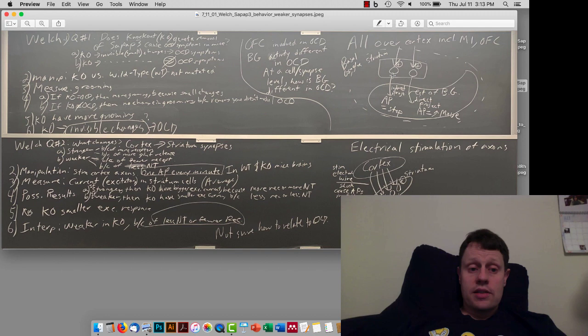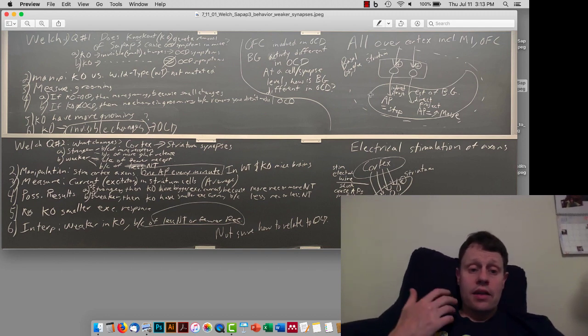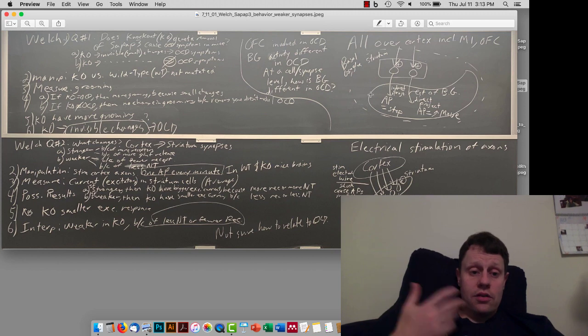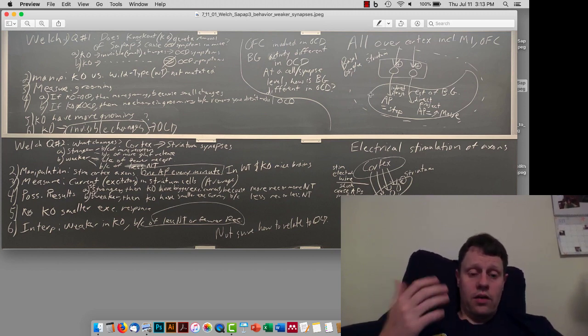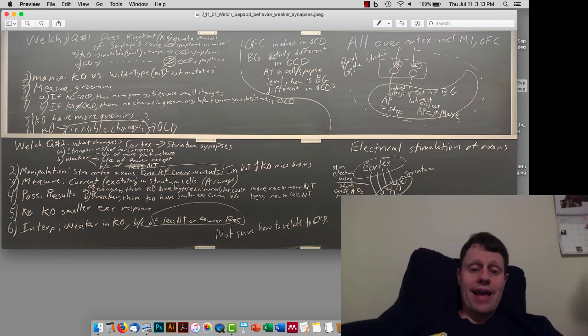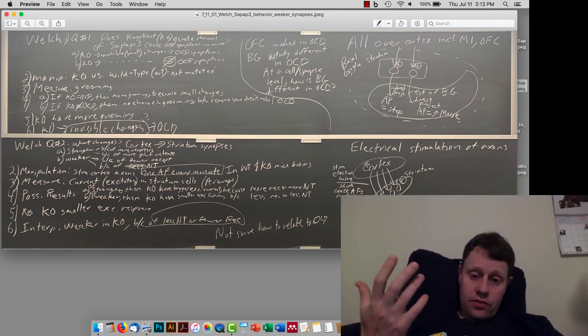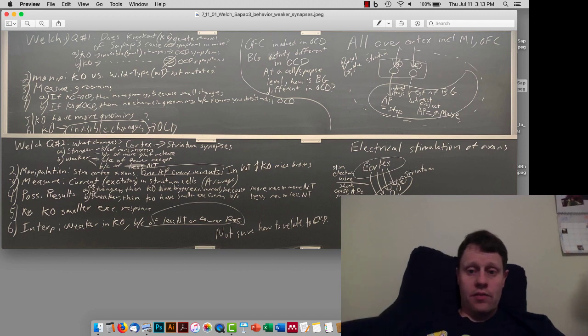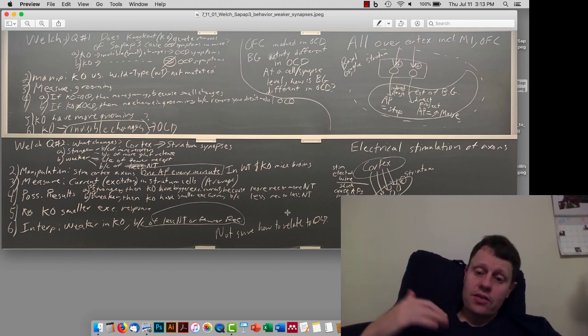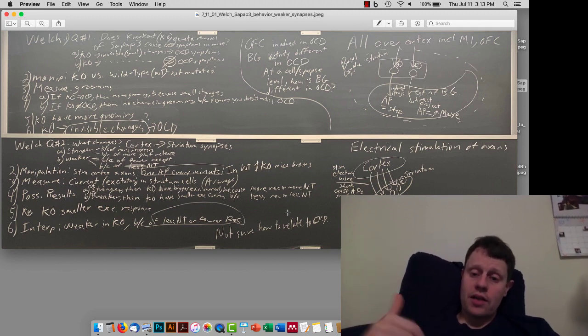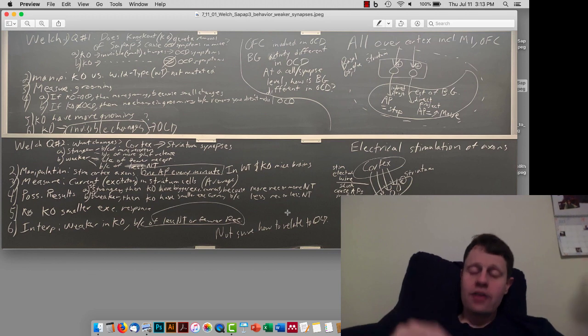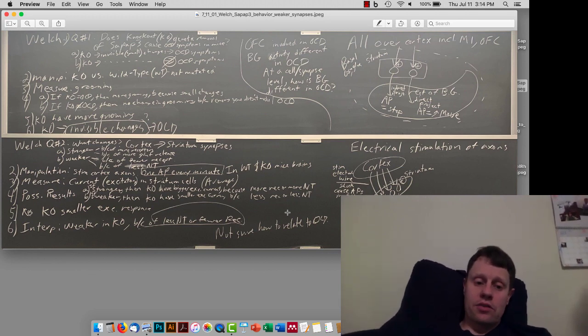The first thing is just to see, are these responses stronger or weaker? What they find is that the excitation, the excitatory response in the striatal cells, is weaker. And so, what they infer is that either there are fewer receptors, or there's less neurotransmitter being released from these presynaptic axons. There are either fewer receptors on the postsynaptic cells in the striatum, or the presynaptic axons that came from the cortex and are now making connections into the striatum might be releasing less neurotransmitter.